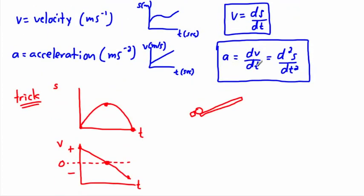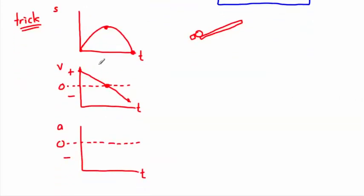Since acceleration is the derivative of velocity, we now look at the slope of the velocity-time graph. If the velocity graph is a straight line, it has a constant slope — a constant negative slope throughout. That means the acceleration is a constant negative value, giving a flat horizontal line on the acceleration-time graph.